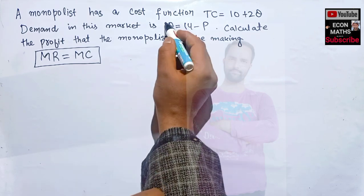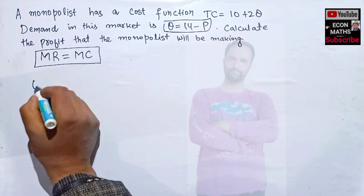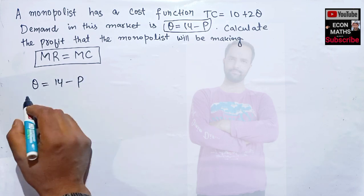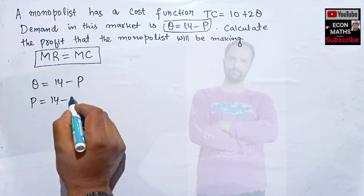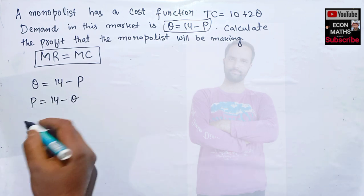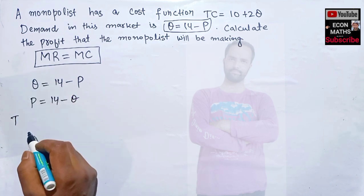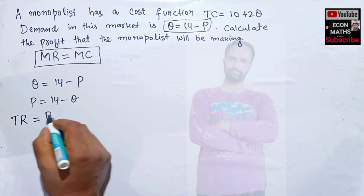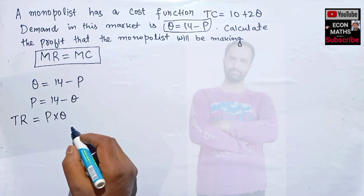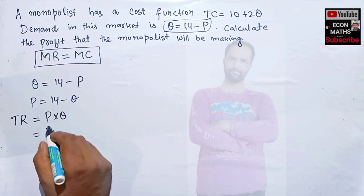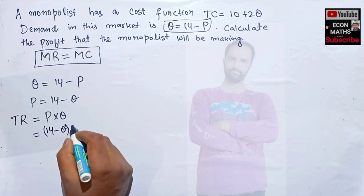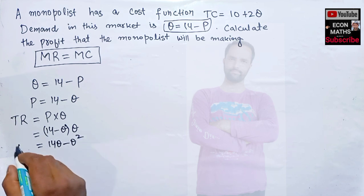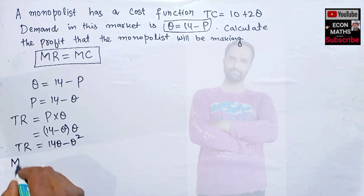We are given the demand function Q = 14 - P. Solving for P: transposing gives us P = 14 - Q. Now we need to find total revenue first. Total revenue is simply price times quantity, so TR = (14 - Q) × Q, which gives us TR = 14Q - Q². This is our total revenue.